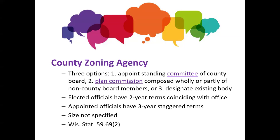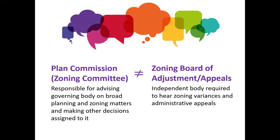Terms of office vary depending on which option you go with. Elected officials have two-year terms coinciding with office, whereas those who are appointed would have three-year terms. Counties get pretty creative with the name of this county zoning agency — land use and planning committee, planning and zoning committee, as well as a ton of other responsibilities might be wrapped into the title. When I talk about the plan commission, I'm referring to all of these bodies. The role of the plan commission is really to advise the governing body on broad planning, zoning, and other land use matters. This is distinct from the zoning board of adjustment or zoning board of appeals, which is an independent quasi-judicial body responsible for variances and administrative appeals.